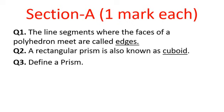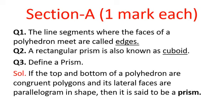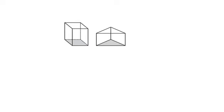The next question asks you to define a prism. If the top and bottom of a polyhedron are congruent polygons and its lateral faces are parallelogram in shape, then it is said to be a prism. Prisms and pyramids are named after their base. The first figure is a rectangular prism and the second is a triangular prism.